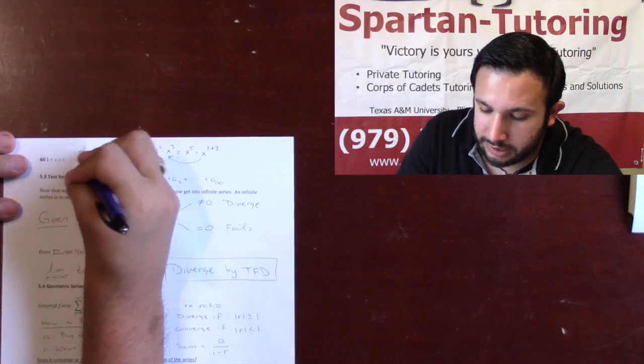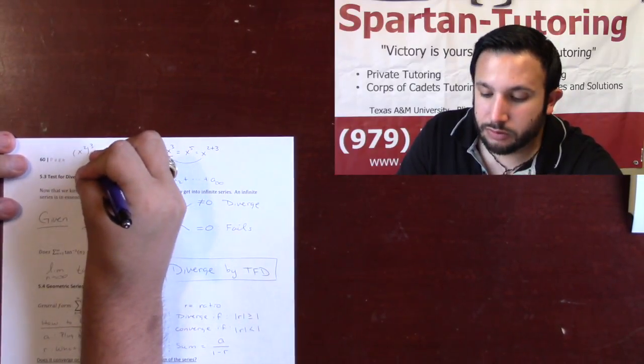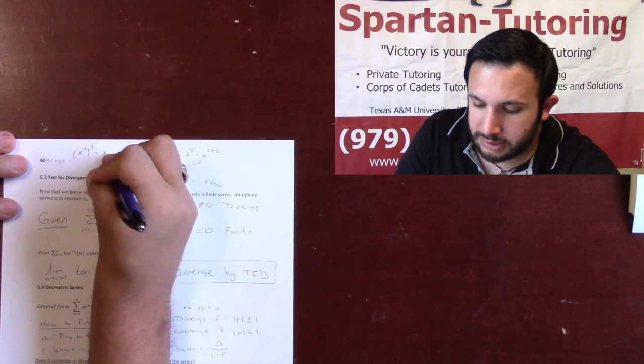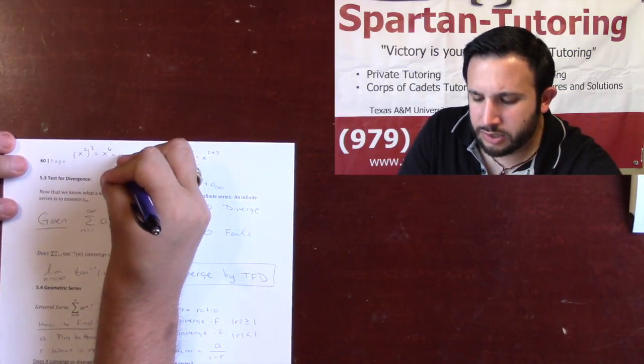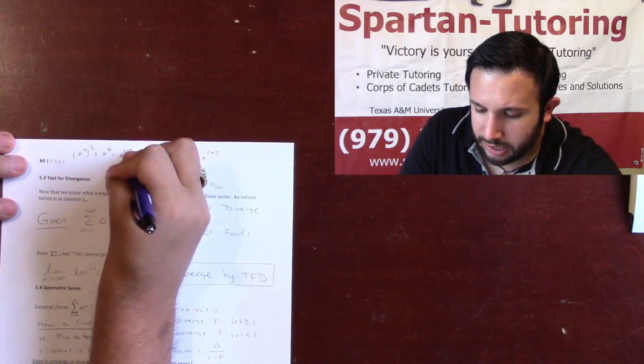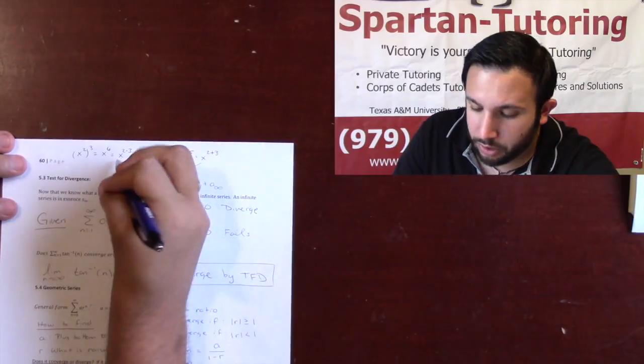Well, answer this for me. What's x squared cubed equal to? Well, x squared cubed is x to the sixth, right? And how do we do that? Well, it's just x to the 2 times 3.